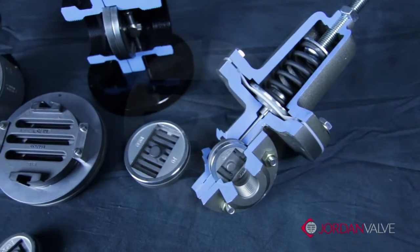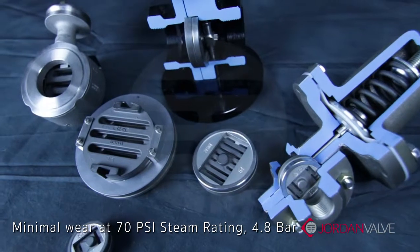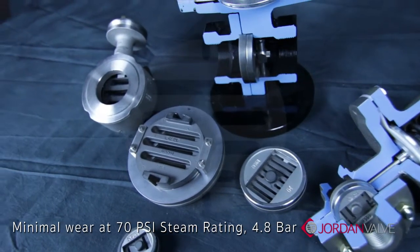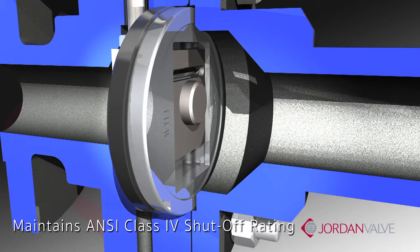Jorcoat is engineered to provide excellent wear, minimizing any erosion and galling under testing conditions of 1 million cycles at 70 psi steam or 4.8 bar. The seats maintain ANSI class 4 shutoff rating.